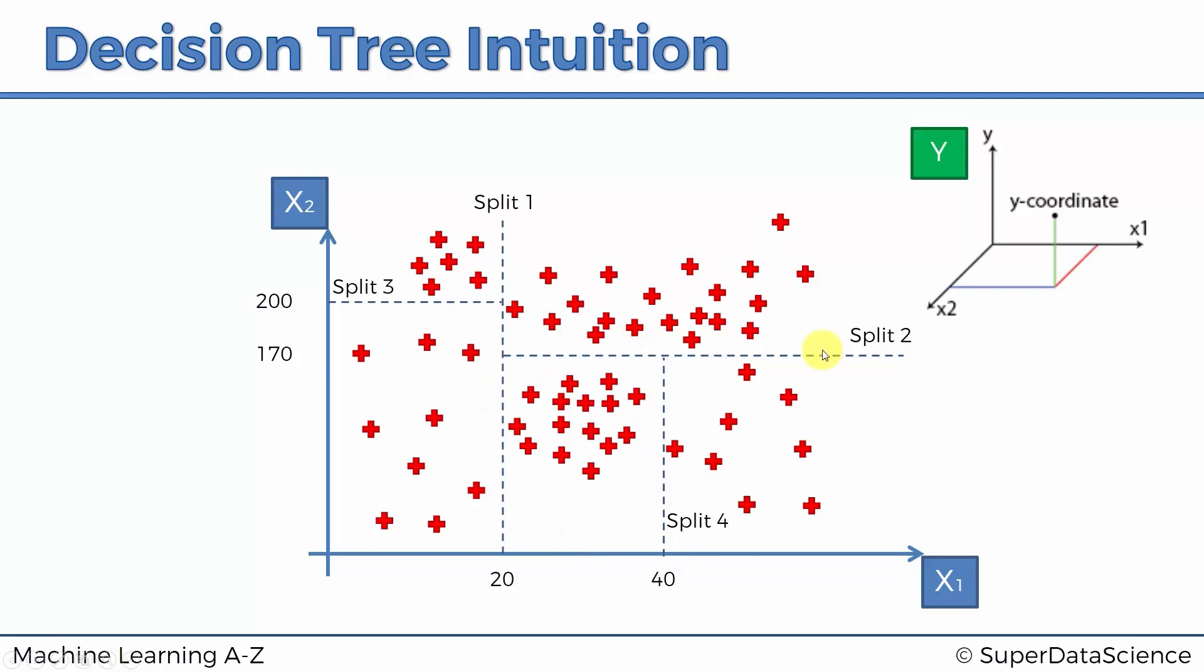So how does that information, that now we know that it falls into this terminal leaf, how does that information help us in terms of predicting the value of y for that new element that we're going to add?